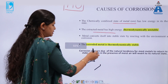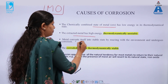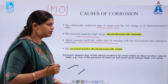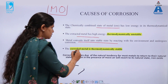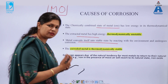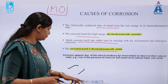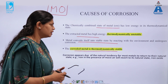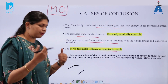The extracted metal has high energy and is thermodynamically unstable. So what happens is the metal converts itself into a stable reacting species, and the metal is hence called the corroded metal — it depletes. This happens because of the environment.